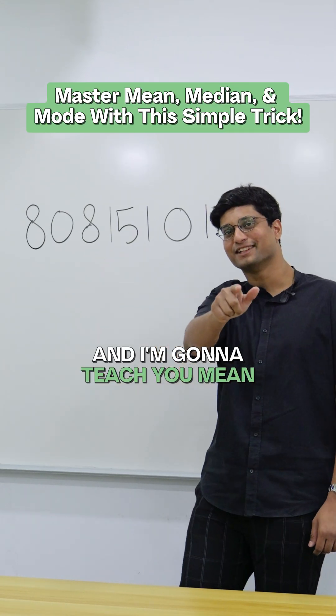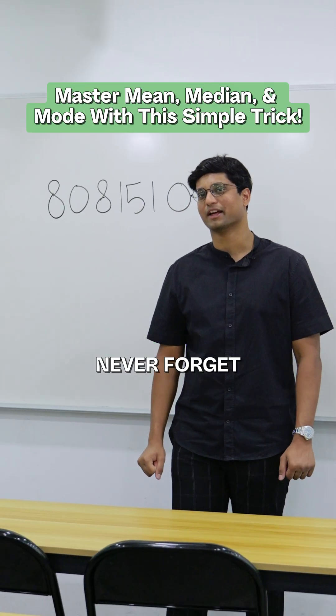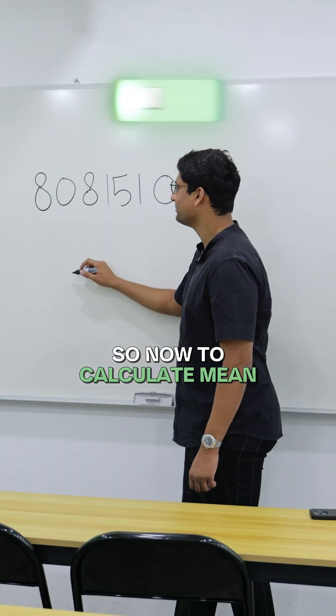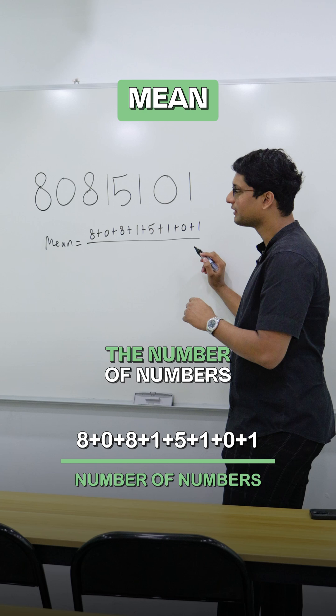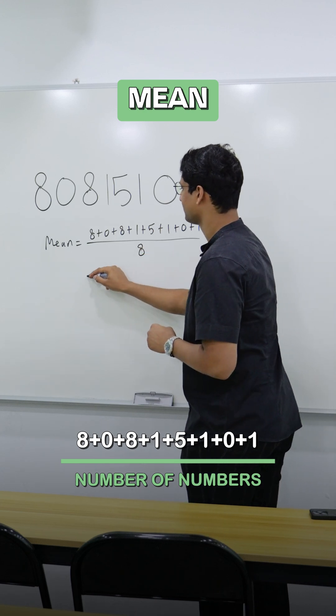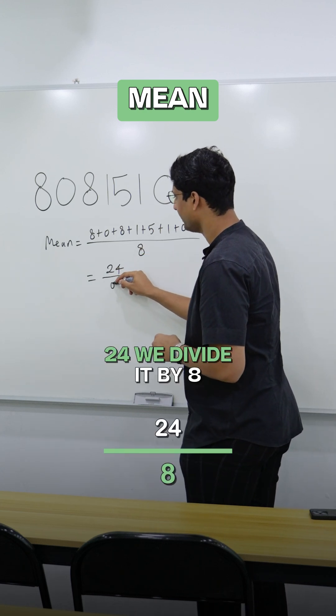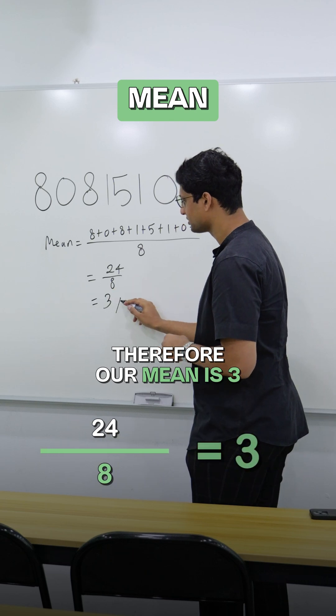This is my phone number and I'm going to teach you mean, mode, median in a way you won't forget. So now to calculate mean, we're going to take the sum of the numbers and then we divide it with the number of numbers, which is 8. 24, we divide it by 8. Therefore, our mean is 3.